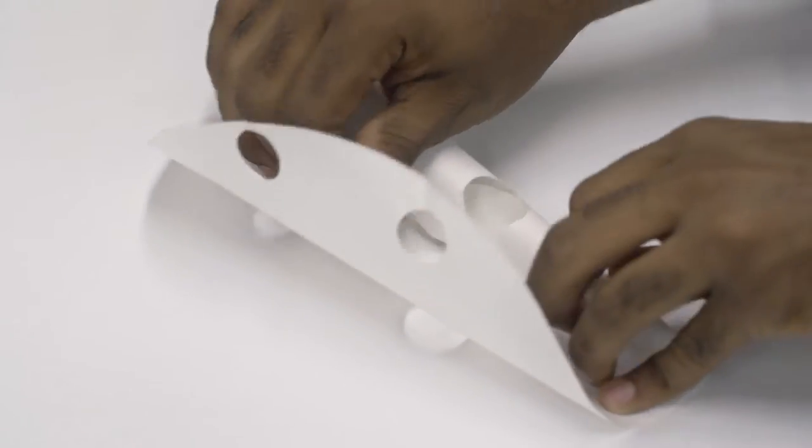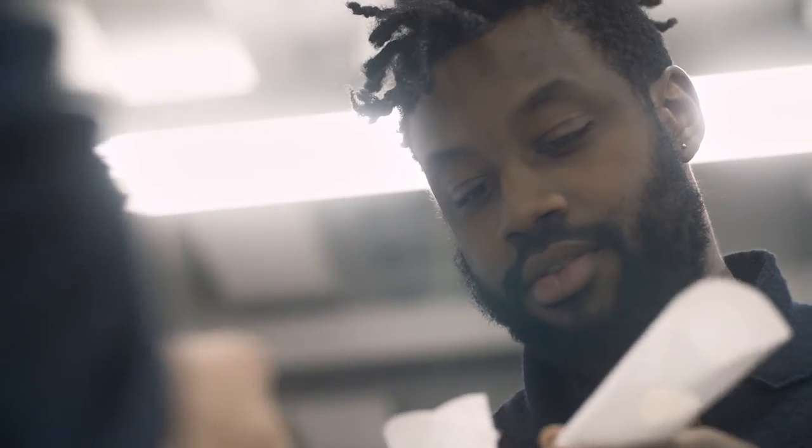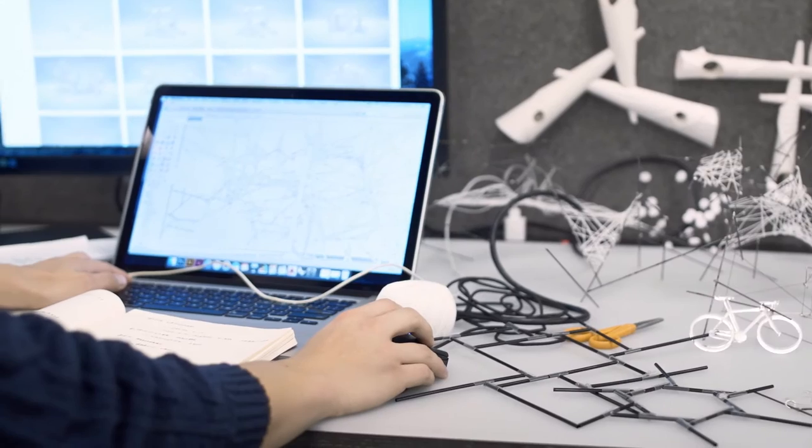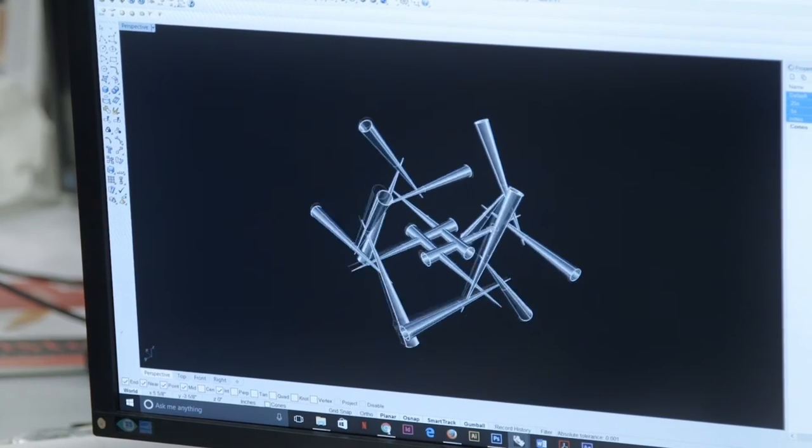In analog, when we made a model, the model could only be one thing. Once we moved to the digital, we were able to make a script that had a single piece perform in all of the ways that each analog piece did. We realized that we could in fact make kinetic models, and our models began to move.